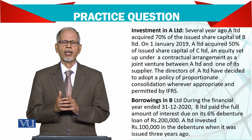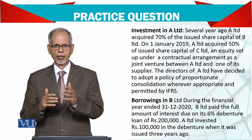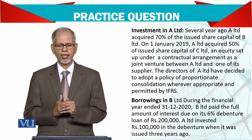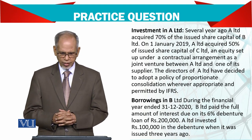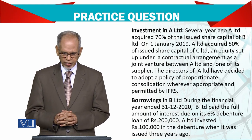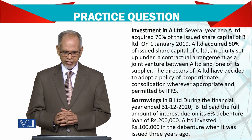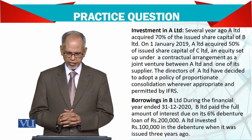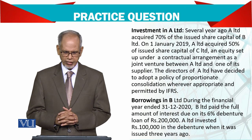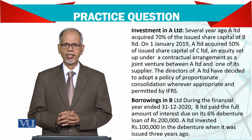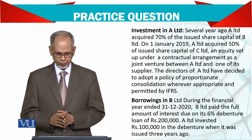Normally what happens is you arrange with the supplier — they support you as well. The directors of A Limited have decided to opt for a policy of proportionate consolidation where appropriate and permitted by IFRS. So now we will deal with B's discussion.